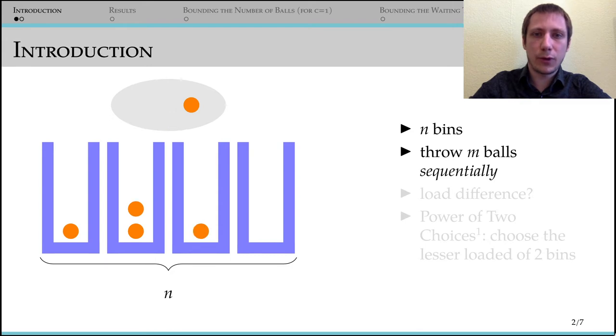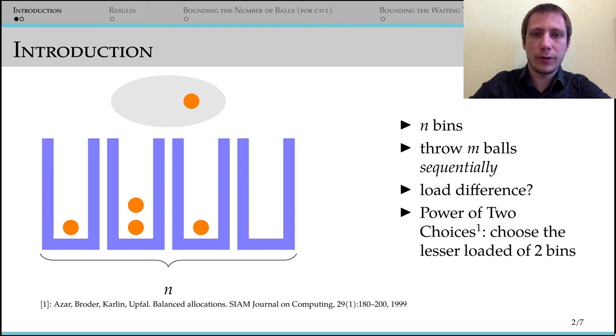In the influential work of Azar et al., it was shown that throwing the balls sequentially and allowing balls to pick the lesser load of two bins improves the load difference substantially. This effect is known as the power of two choices and applies to a range of settings.